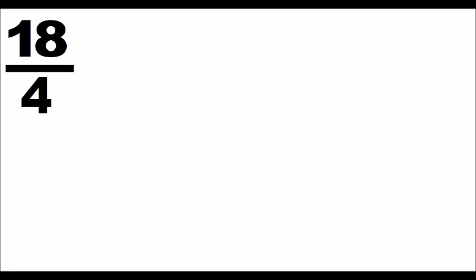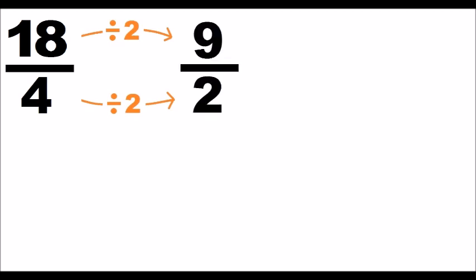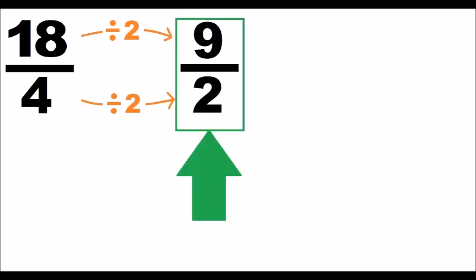Hello. First step, we simplify by 2 the initial fraction, then we get this fraction that we'll use to generate the mixed number.